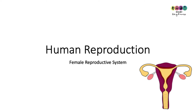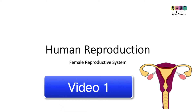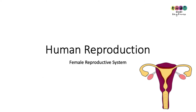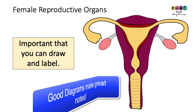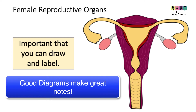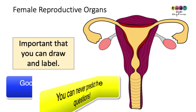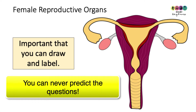This video is about human reproduction, focusing on the female reproductive system. This is video one of the topic, as human reproduction is quite long and best broken into short videos. It's really important that you can draw and label a diagram of the female reproductive system. Just bear in mind that because a topic was asked on a previous year does not mean it cannot be asked again.